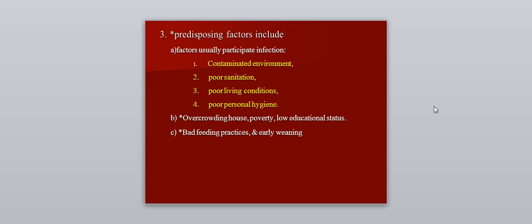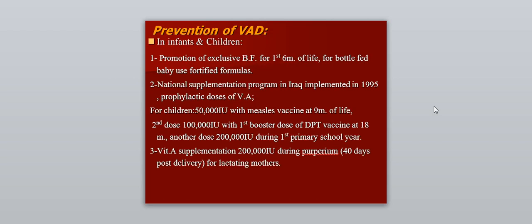Predisposing factors for vitamin A deficiency include factors that precipitate infection, such as contaminated environment, poor sanitation, poor living conditions, and poor personal hygiene. In addition, there is overcrowding, poverty, low educational status, bad feeding practices, and early weaning. These are predisposing factors especially in children under five years in developing countries.